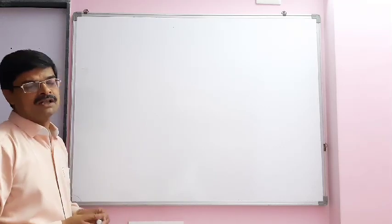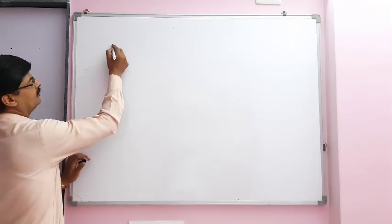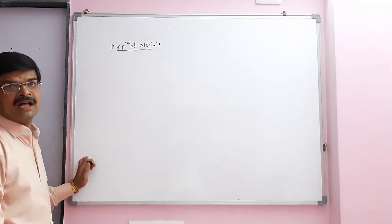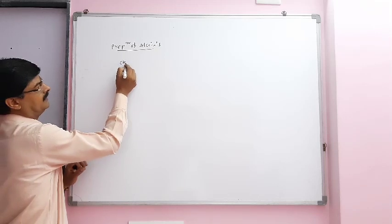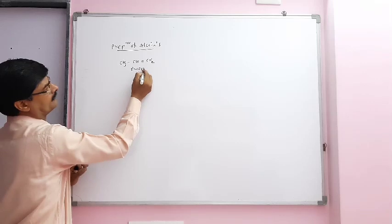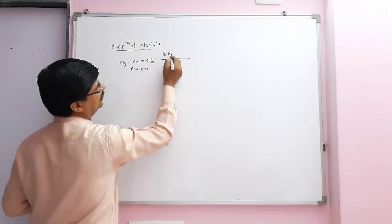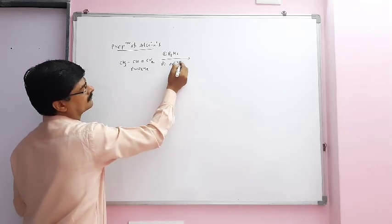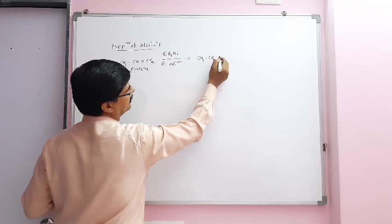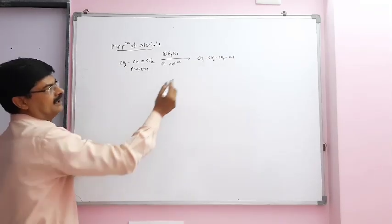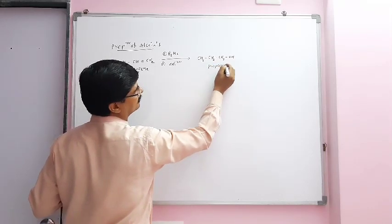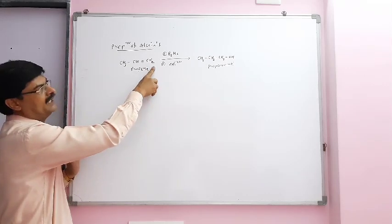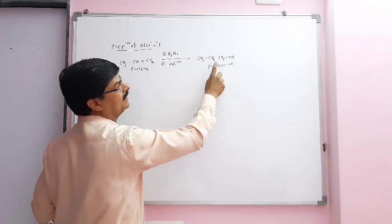Let's study another method: the hydroboration-oxidation method, also used for preparation of alcohol. CH3-CH=CH2 (propene) in the presence of B2H6 and on oxidation gives CH3-CH2-CH2-OH. Remember, here we are getting propan-1-ol. The product obtained here is according to the anti-Markovnikov rule, because we are getting propan-1-ol.